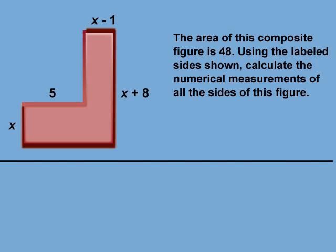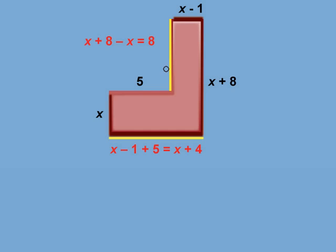Let's first calculate the measurements of the unlabeled sides. This vertical portion is this entire length of x plus 8 minus the length of x, leaving a length of 8. This horizontal section is the sum of this length of 5 and this length of x minus 1, leaving a length of x plus 4.